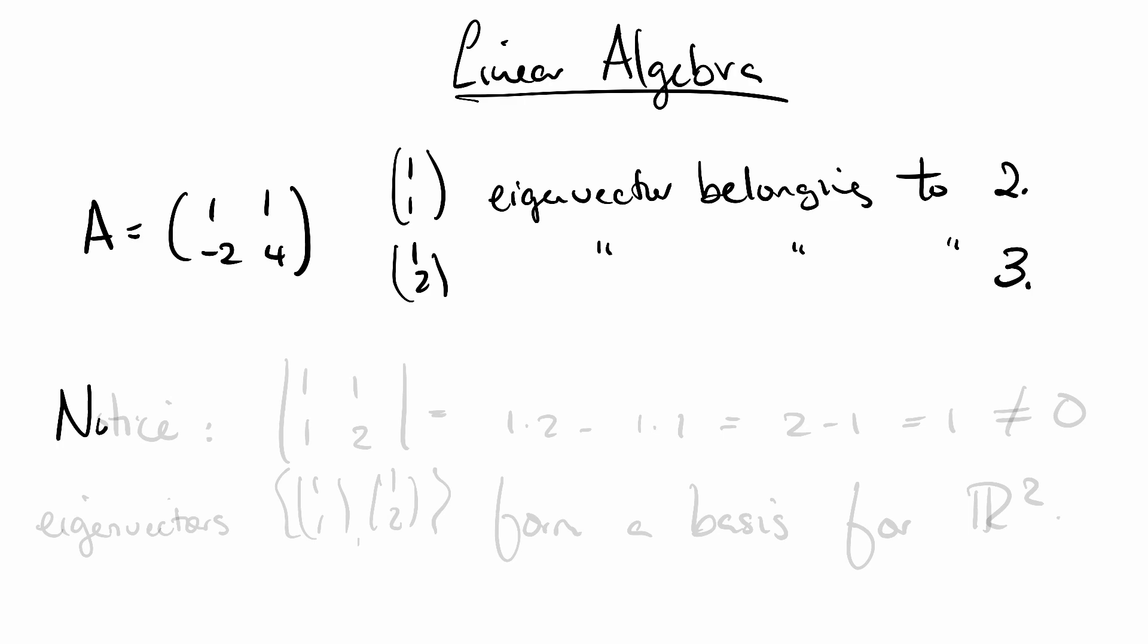Here's something that I want you to notice. If we take the eigenvectors and use them as columns of a matrix, then we find the determinant is 1 by 2 minus 1 by 1, which is 2 minus 1, which is 1, which is definitely not 0. What this tells you is that (1, 1) and (1, 2) are linearly independent vectors. And the upshot of that is that these eigenvectors form a basis for R².